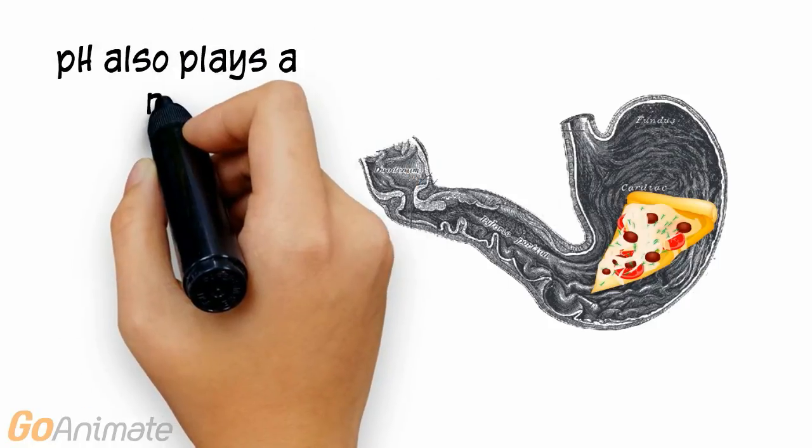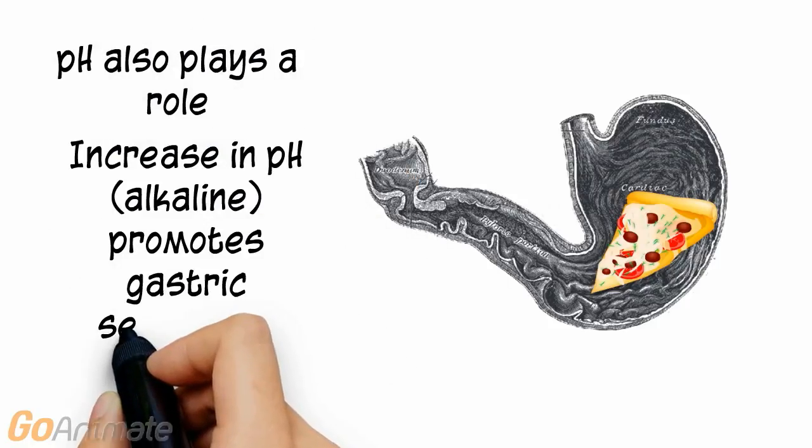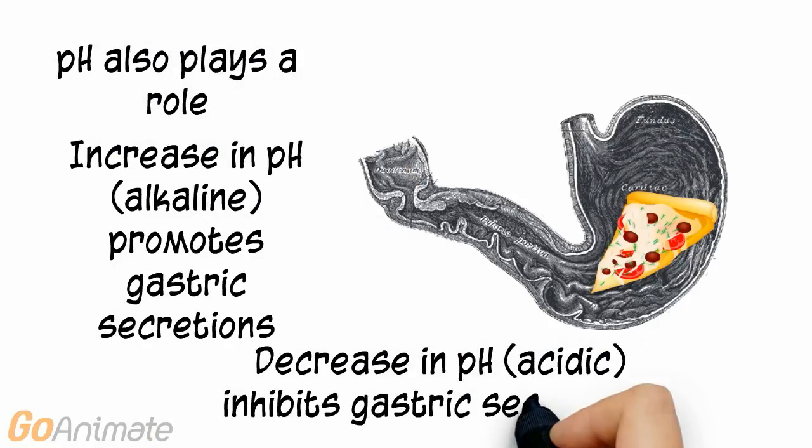pH also plays a role. An increase in pH, or alkaline, promotes gastric secretions, while a decrease, or acidic pH, inhibits secretions.